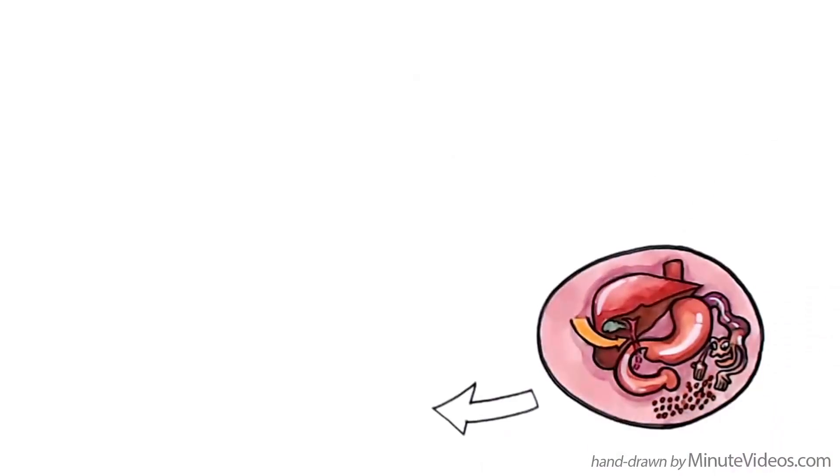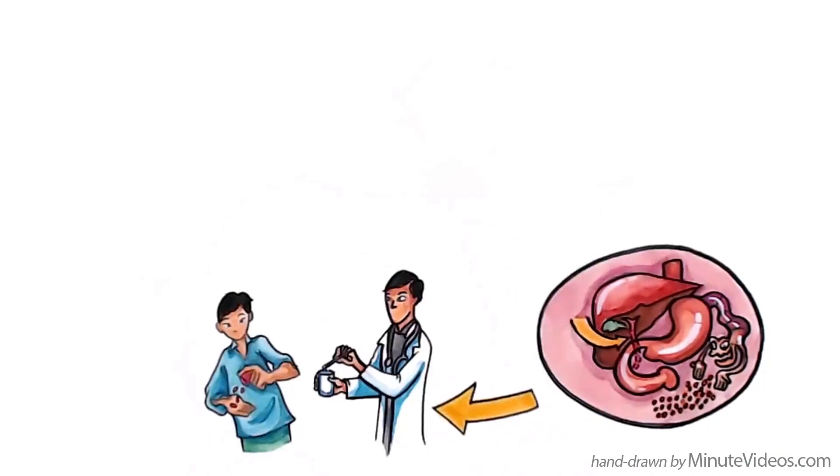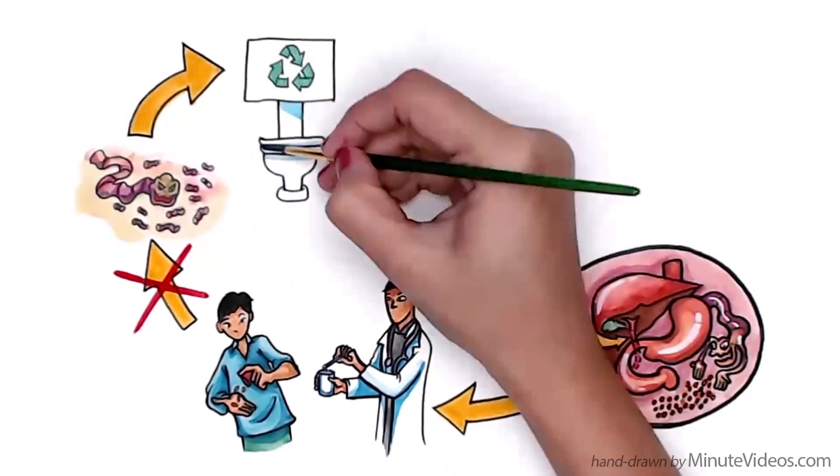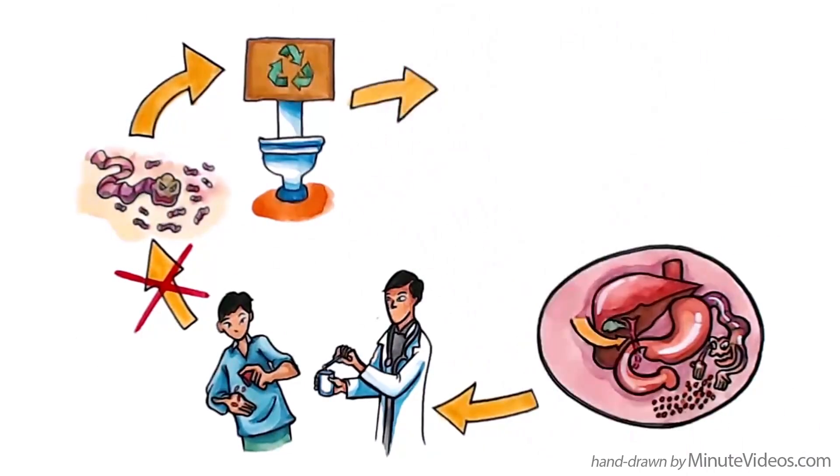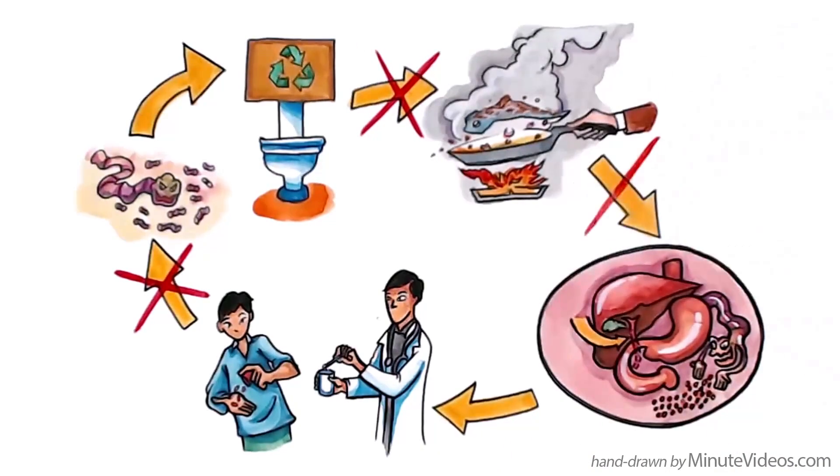Several successful liver fluke programs have been run in Thailand, which includes stool examinations and treating infected people with praziquantel to stop the production of new eggs, improving hygienic defecation to interrupt the disease's transmission, and promoting cooked fish dishes to prevent infection.